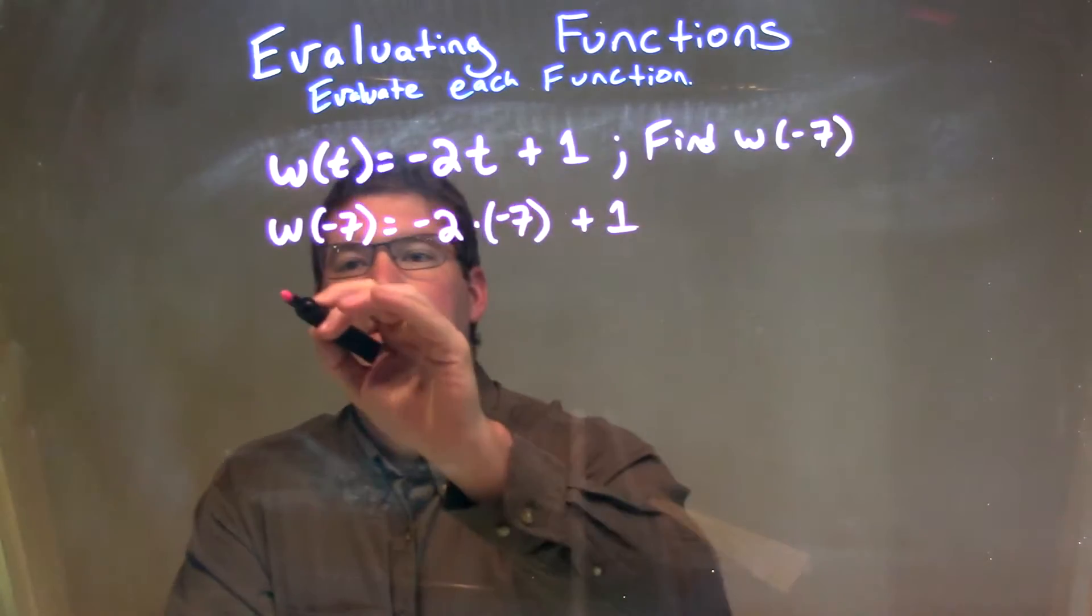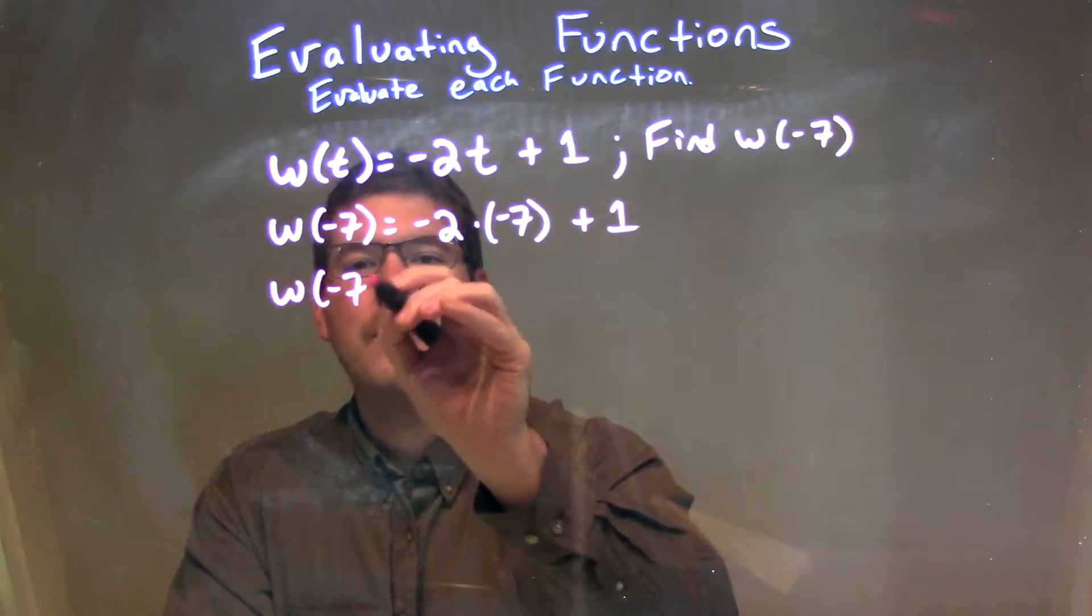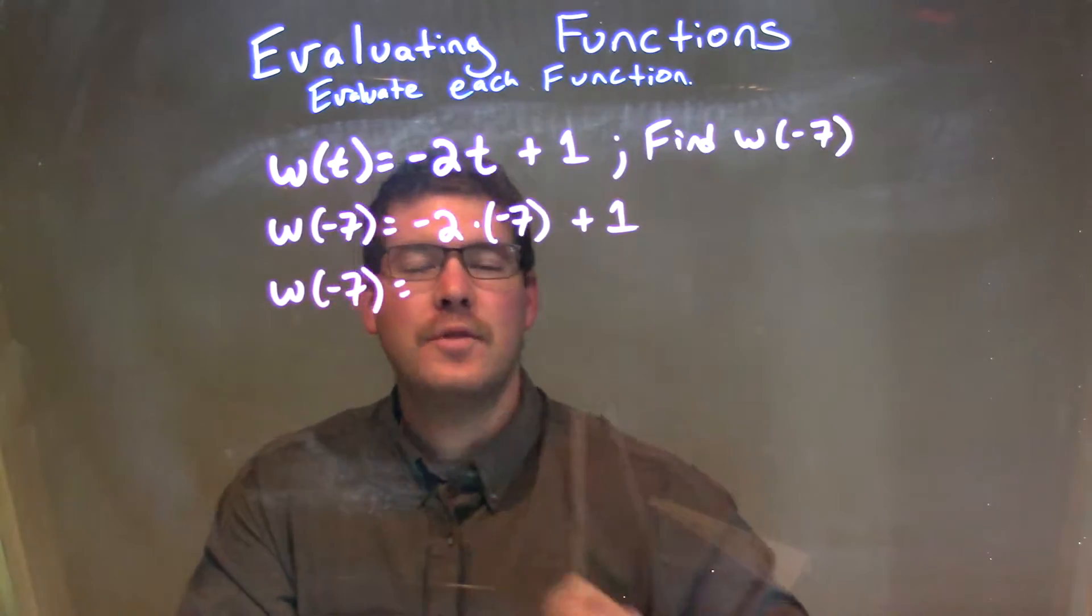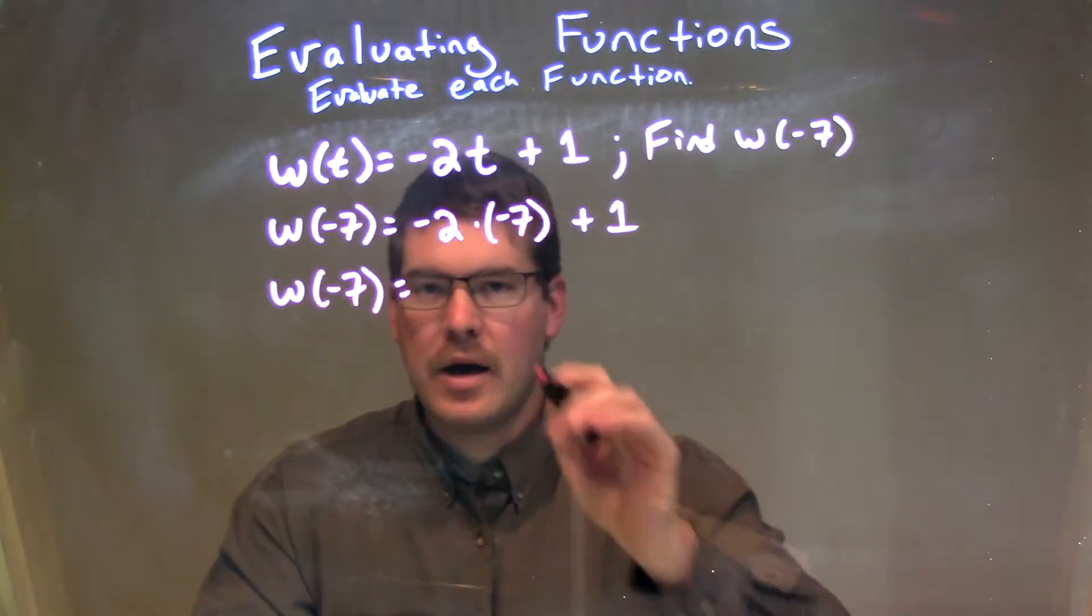Now let's just simplify that. w of negative 7 comes down. Negative 2 times negative 7 is a positive 14.